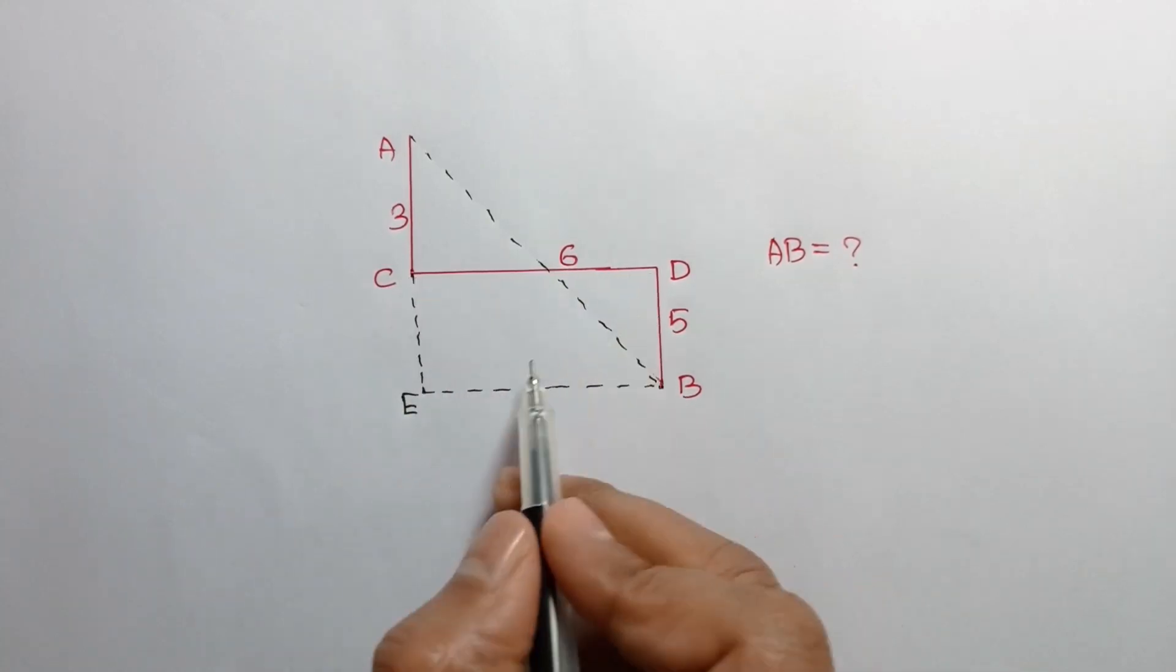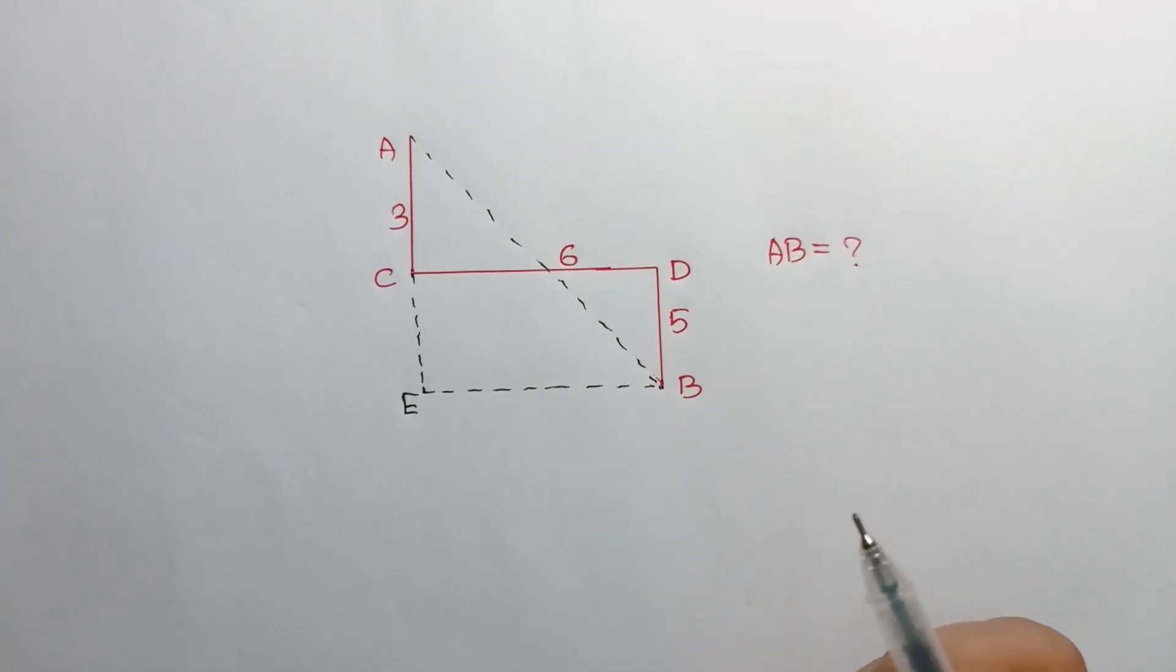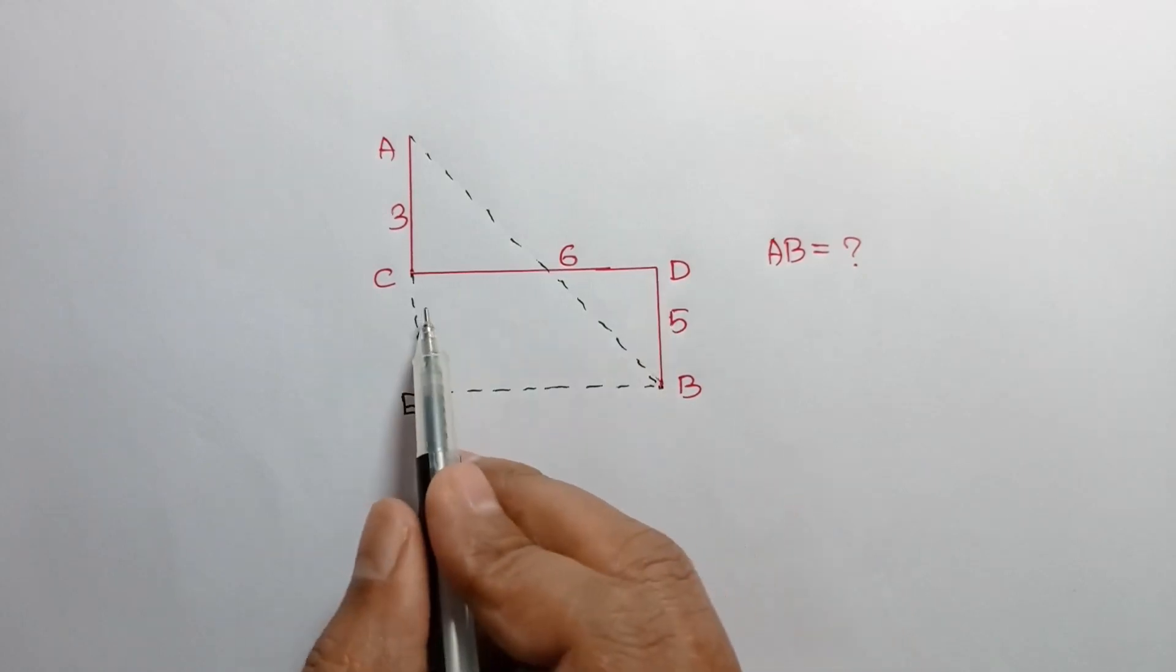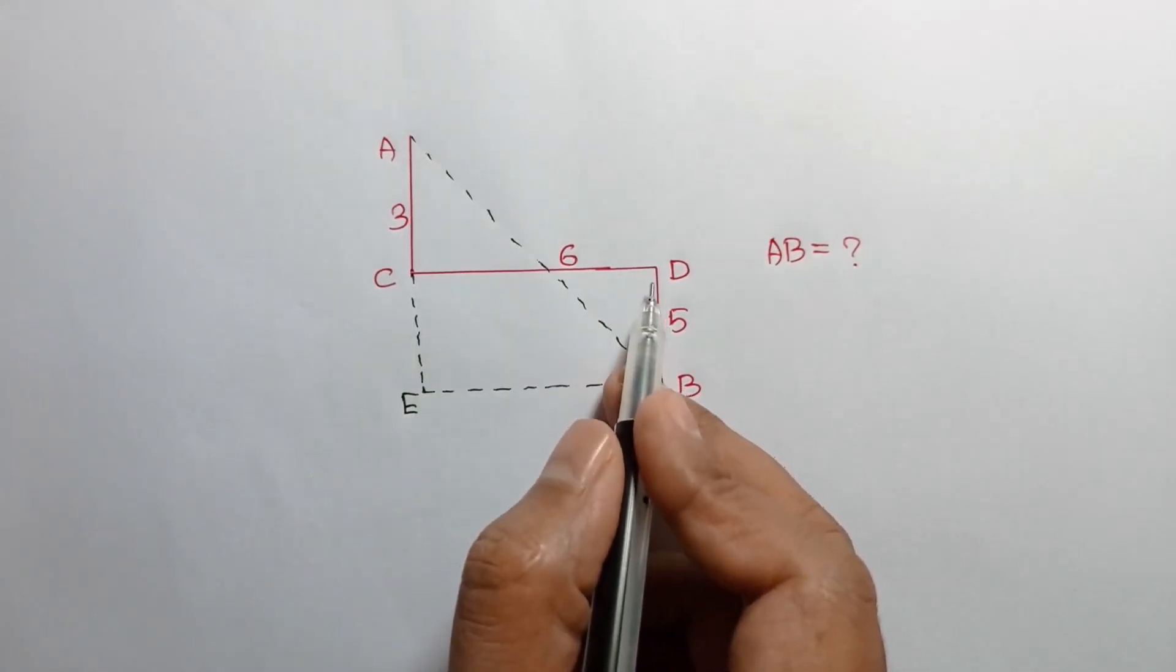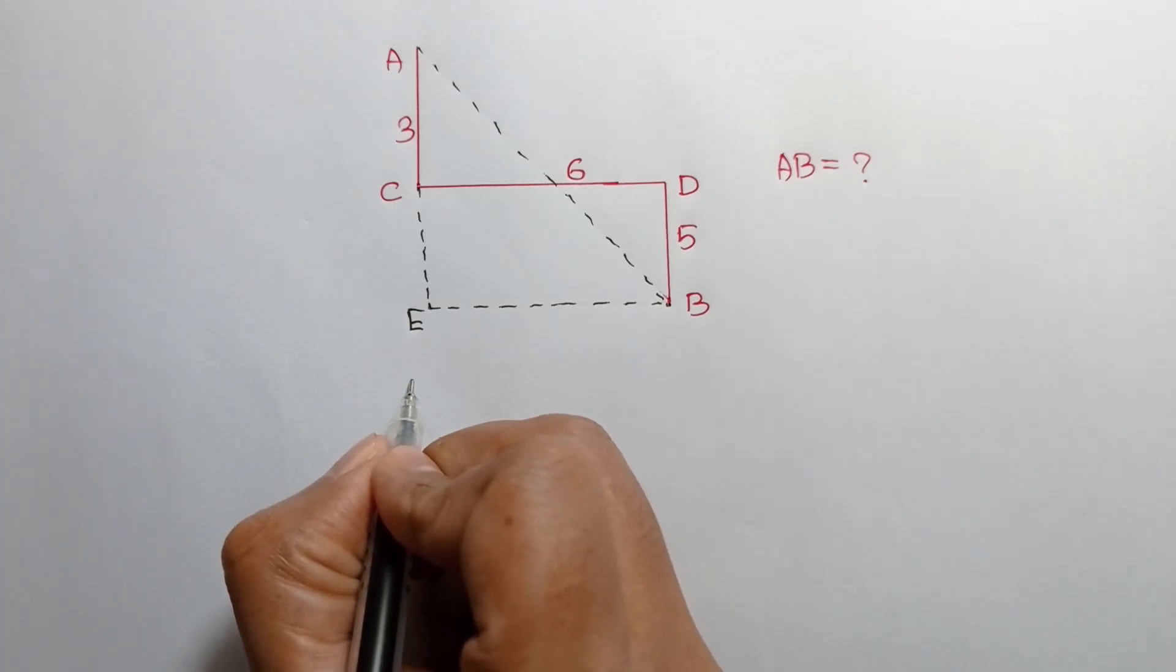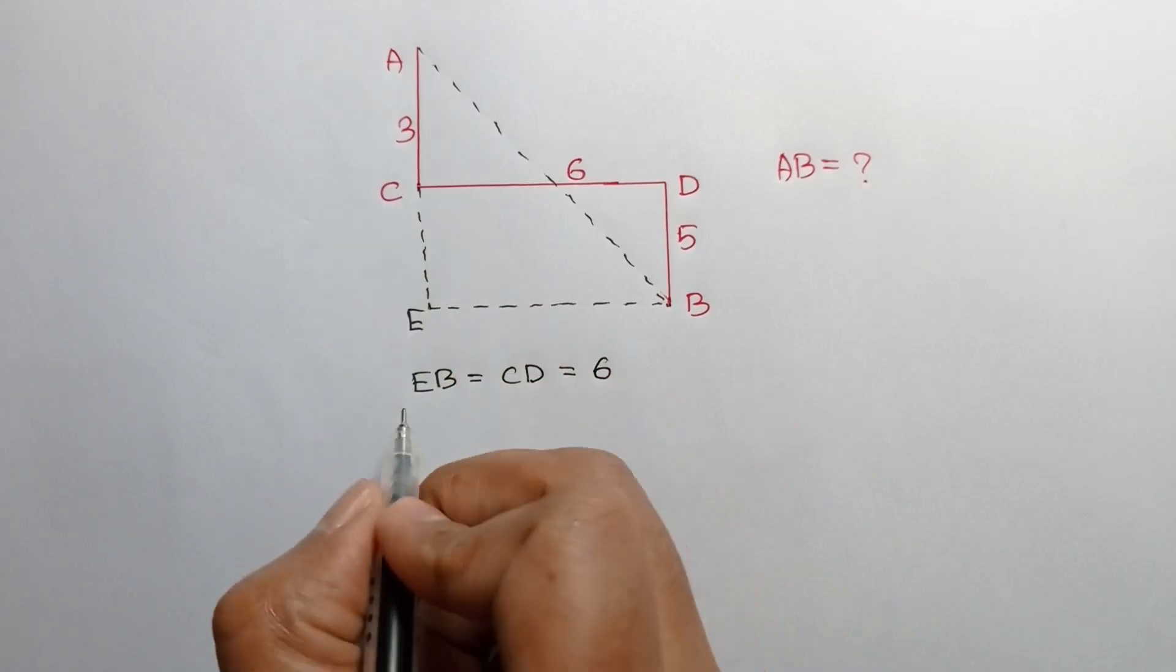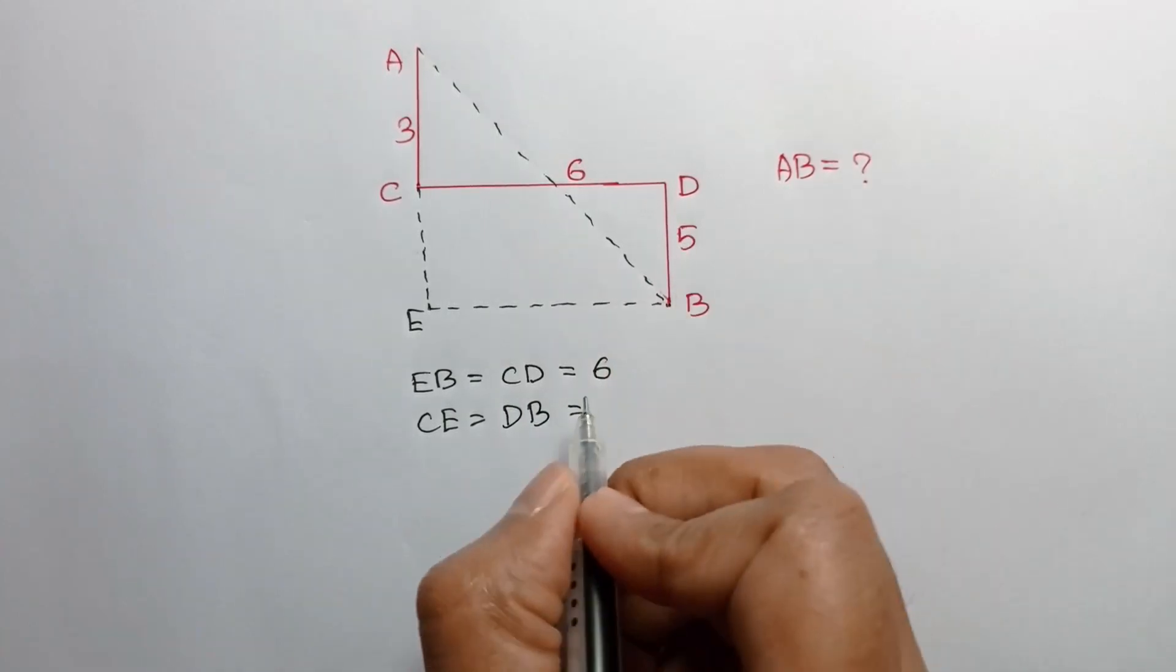As these two are parallel and angle ECD and angle CDB are right angles, so CE and DB is also parallel. So ECBD is a rectangle, so EB is equal to CD and CE is equal to DB. We can write EB is equal to CD, and CD is equal to 6 unit, and CE is equal to DB, and DB is equal to 5 unit.